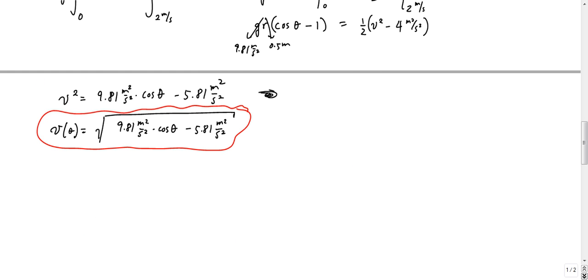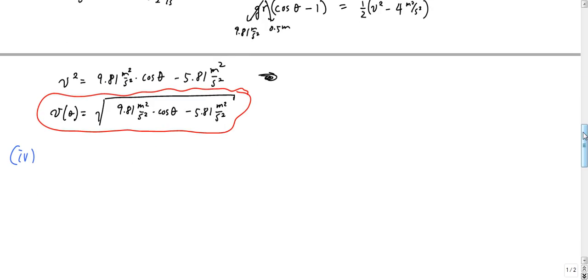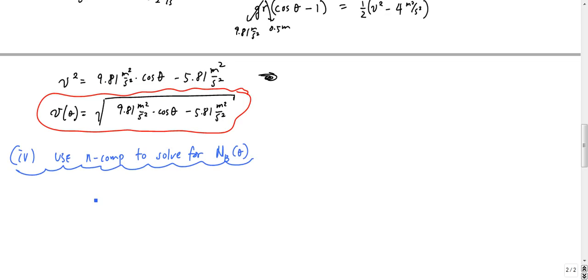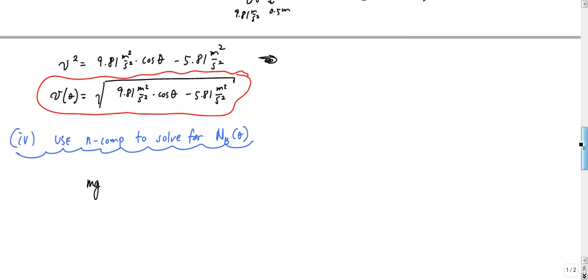So the last part here — part four — is to use the n-component to solve for the normal force on the block as a function of theta. We had mg cosθ plus N_b is equal to mv squared over rho. And rho, the radius of curvature, is still 0.5 meters.